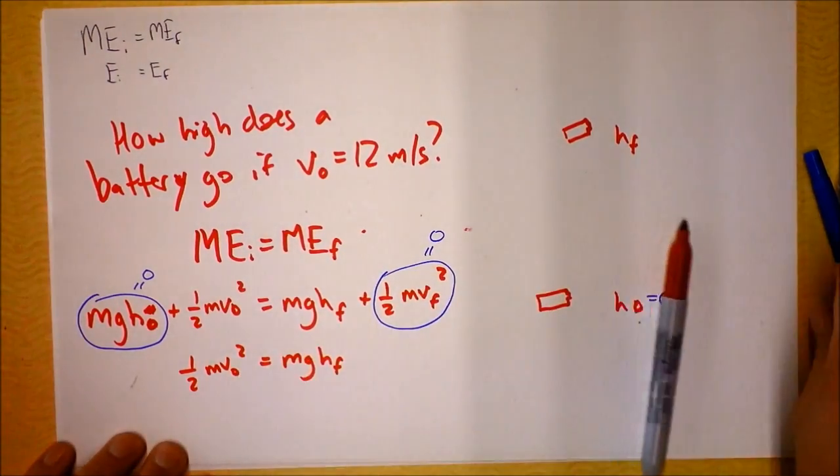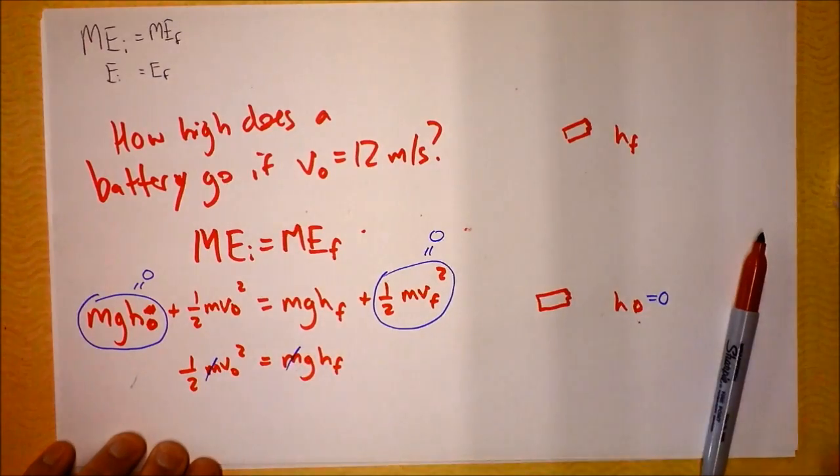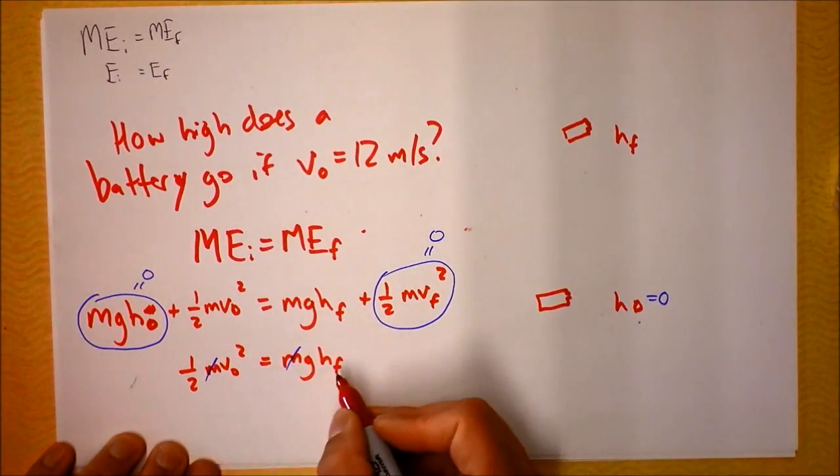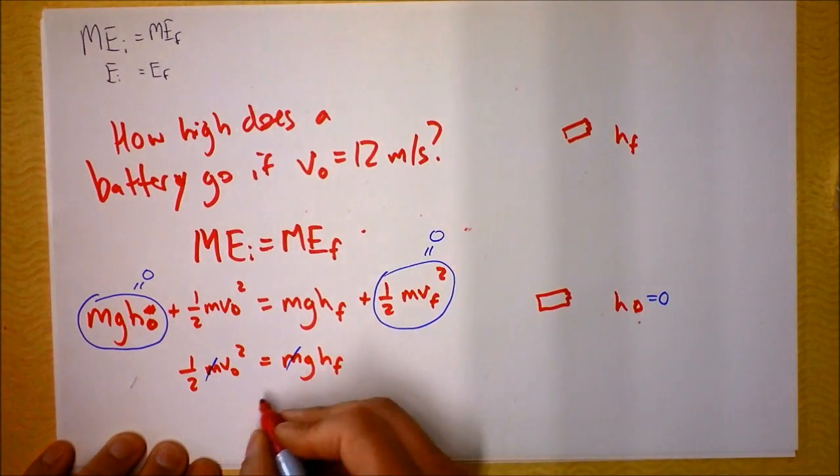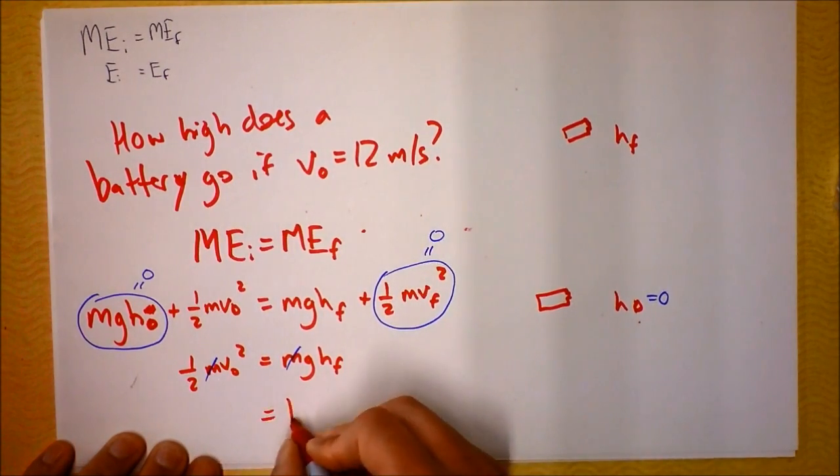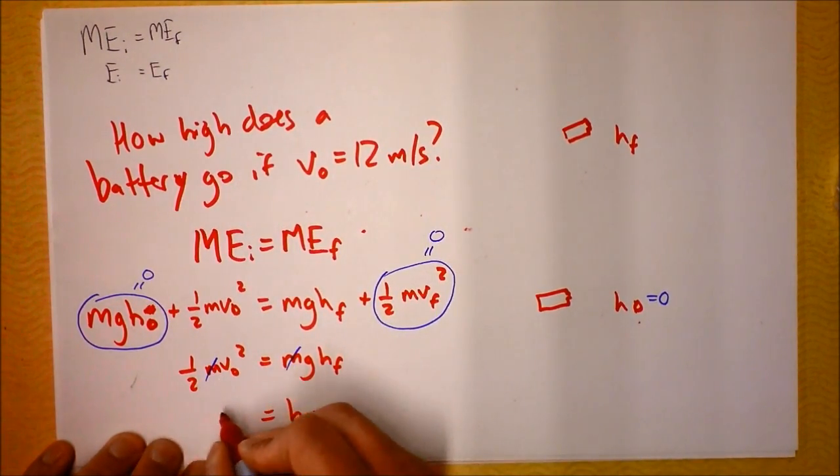We're gonna solve this equation for what we're trying to find, which is how high does the battery go. That would be H final. Dividing by G, H final is equal to V naught squared over 2 times G.